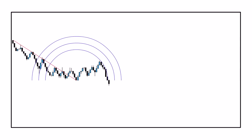The Fibonacci arcs work exactly the same way. They are drawn from the swing high to swing low and show the potential support and resistance areas. Here you can see that the price is trading down along the 38.2 arc line until it breaks the previous lows and takes the next leg lower.